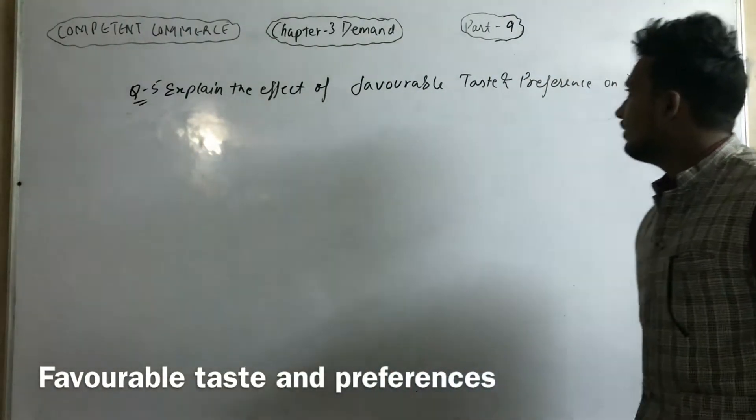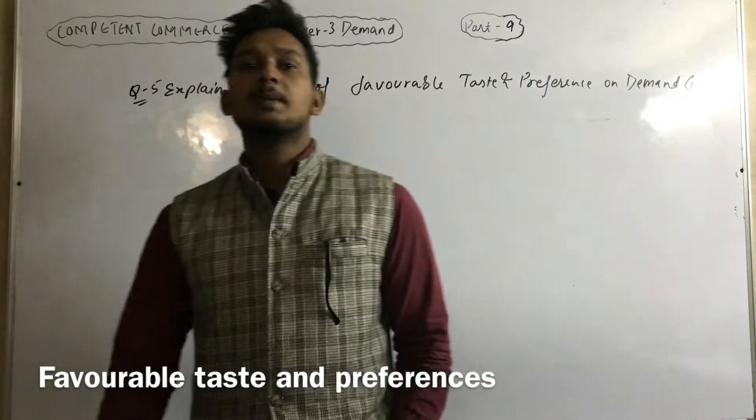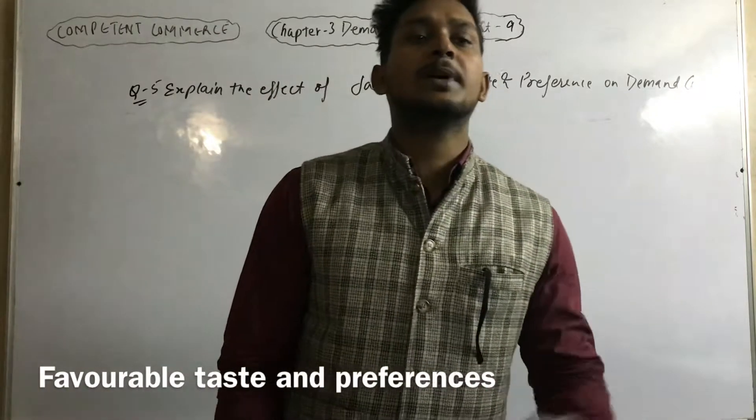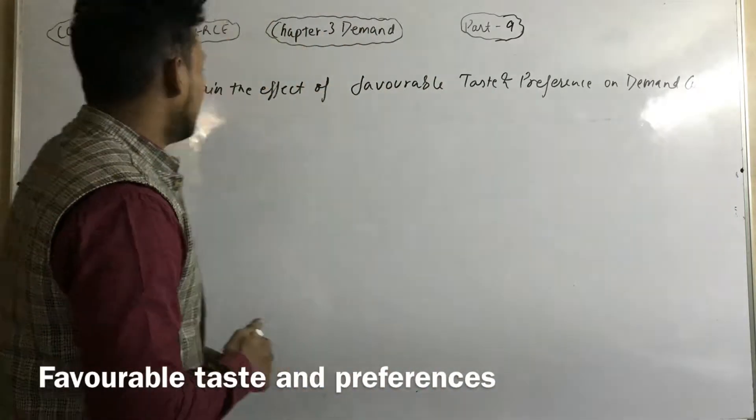Now we study question number five: Explain the effect of favorable taste and preference on the demand curve of the given commodity. When taste and preference is favorable for the particular commodity, then what will be the demand?